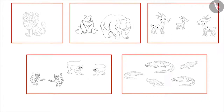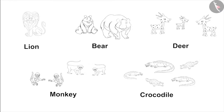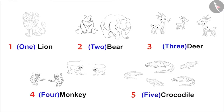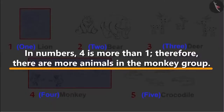The mother asks: can you tell me if there are more animals in the lion group or in the monkey group? Pinkie answers: there is one animal in the lion group and four animals in the monkey group. Amongst the numbers, four is more than one. Therefore, there are more animals in the monkey group.